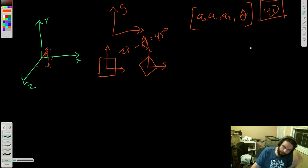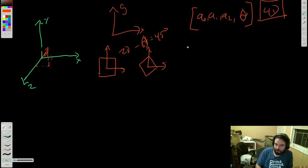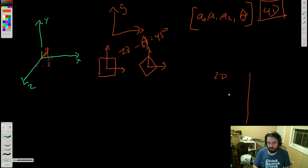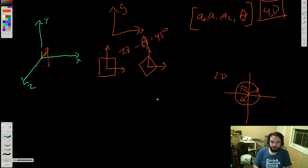What's interesting about quaternions is we deal with unit quaternions, meaning their length is one. If you think about a two-dimensional vector with length one — here's one, here's another, here's another — if you graph all two-dimensional vectors with length one, you'll get a circle.